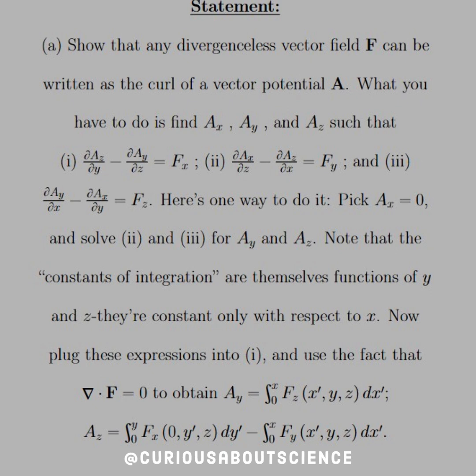What you will have to do is find Ax, Ay, and Az such that we have the curls equal, meaning that partial Az with respect to y minus partial Ay with respect to z equals the x component of the field itself. You have an Fy component and an Fz component that need to be equated to partials of A in their components, respectively.